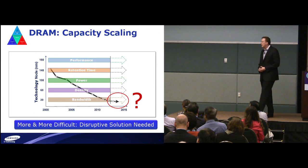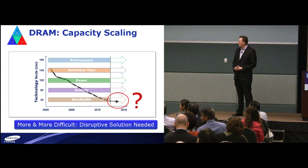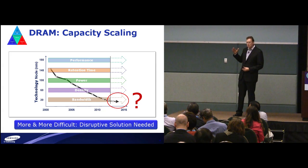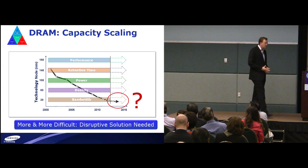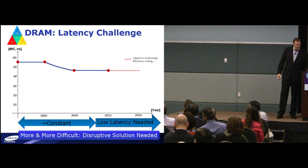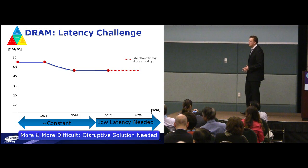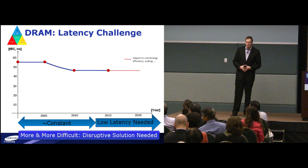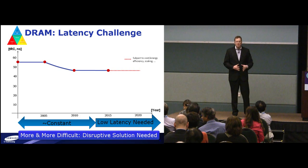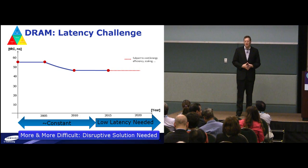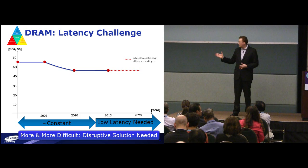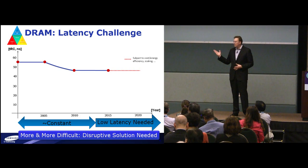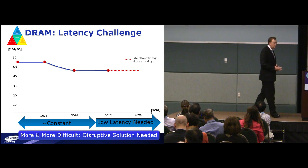DRAM capacity scaling is becoming more and more difficult. We are continually innovating in our factories to figure out how to get the basic capacitive structure of DRAM to continue to scale. The application requirements that many of the people in this room drive are not going to allow us to increase latency significantly to DRAM. DRAM latency has been roughly constant for the past approximately 15 years. As we move forward and look at new memory architectures and topologies, we're not going to be allowed to put latency off the cliff — that's a fundamental constraint.